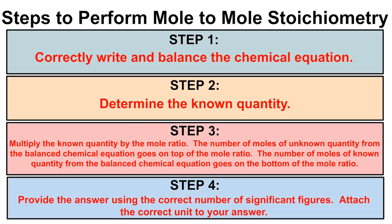When performing mole-to-mole stoichiometry problems — where the known quantity is expressed in moles and the unknown quantity you want to express in moles — here are the steps to follow: Step 1: correctly write and balance the chemical equation. Step 2: determine the known quantity. Step 3: multiply by the mole ratio. Step 4: provide your answer using the correct number of significant figures and attach the correct unit.